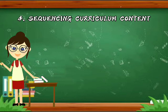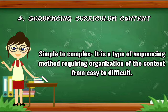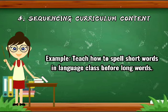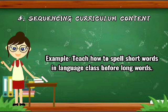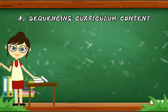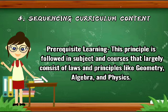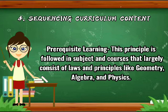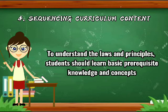First, simple to complex — a sequencing method requiring organization of content from easy to difficult. Example: teach how to spell short words in language class before long words. Second, prerequisite learning — followed in subjects like geometry, algebra, and physics, where students must learn basic prerequisite knowledge and concepts before they can understand the laws and principles.